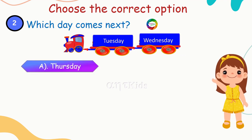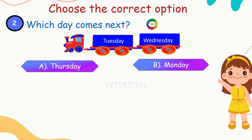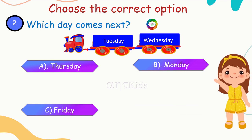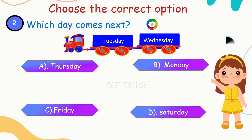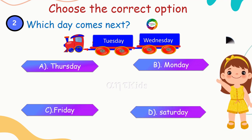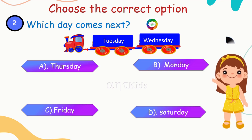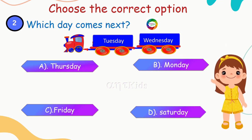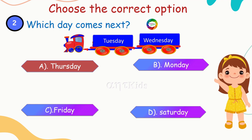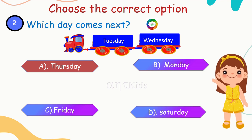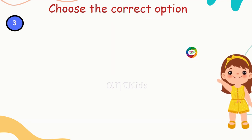Next question: which day comes after Tuesday and Wednesday? Which day comes next? Options are: Thursday, Monday, Friday, Saturday. Yes, you're right — Thursday!